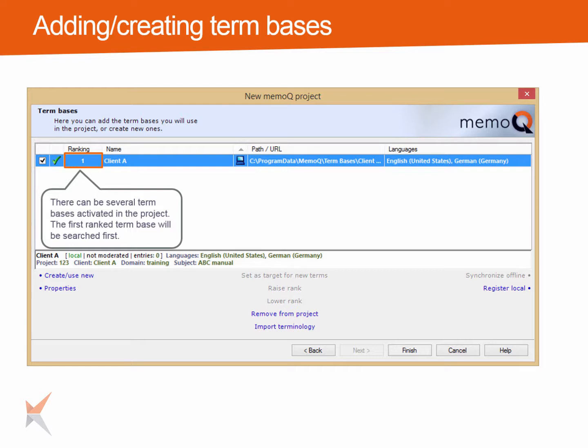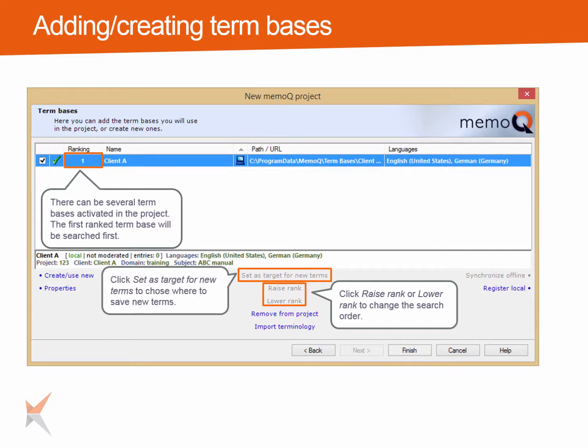There can be several term bases activated in a project. The term base you chose first will have rank 1, meaning it is the database searched first and the one you will use to save your terms into. Any other activated term base will be used for searching terms only. By raising or lowering the rank using the links below, you can define the order in which term bases will be searched. If you want to use another term base as the target for new terms, right-click the name and select set as target for new terms. It will then be displayed in bold in the list.